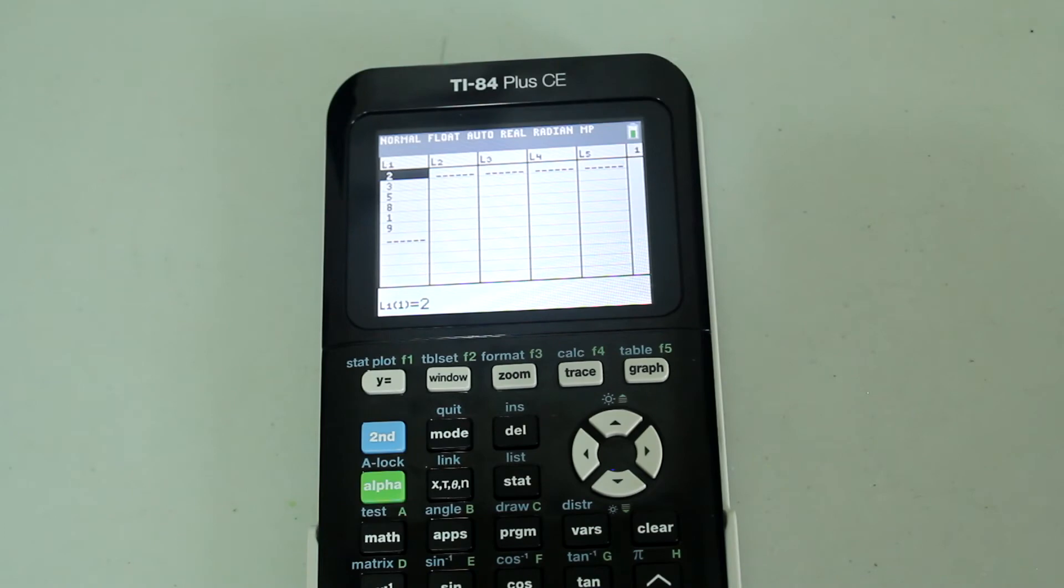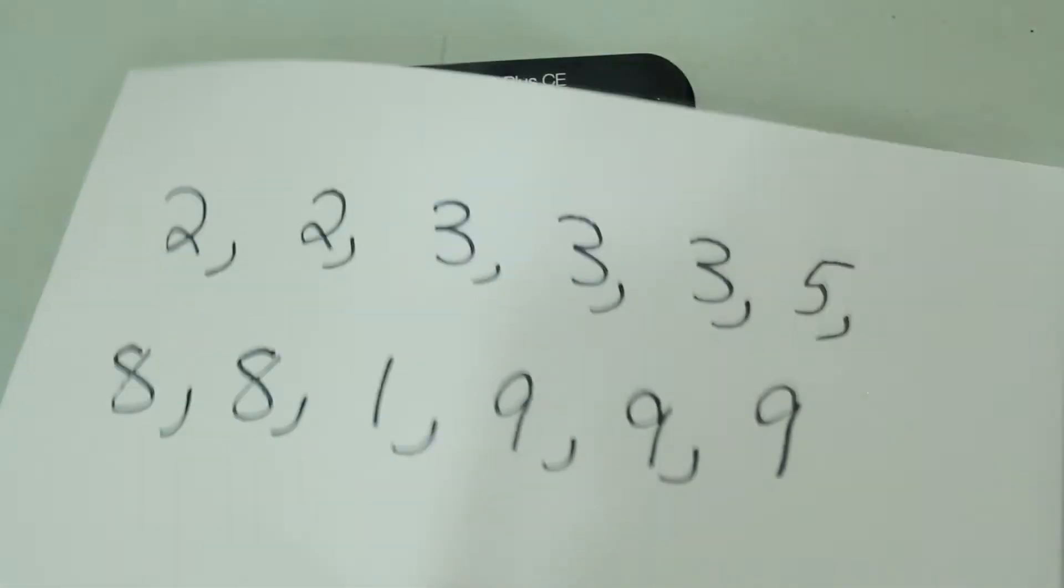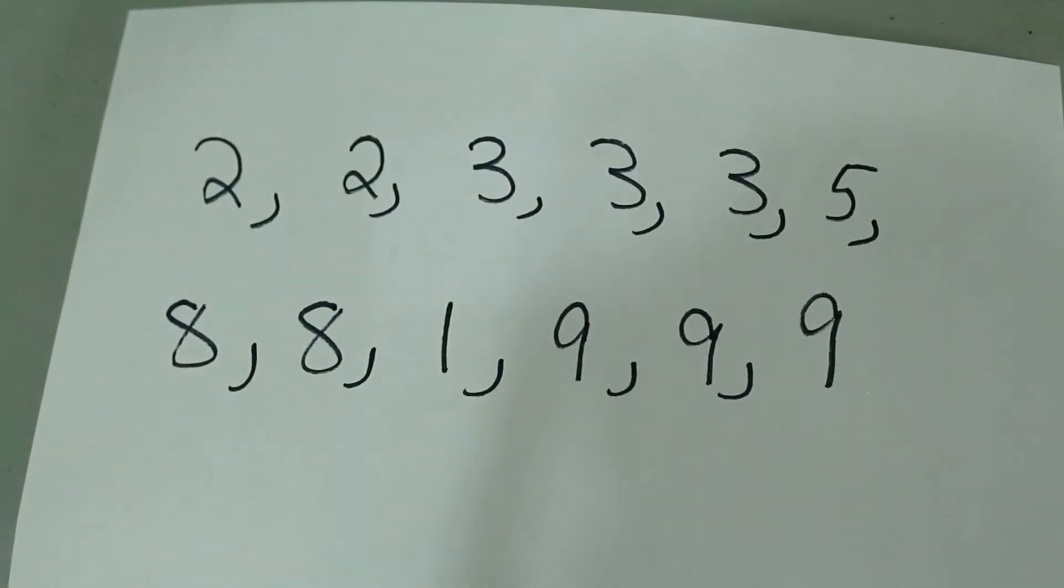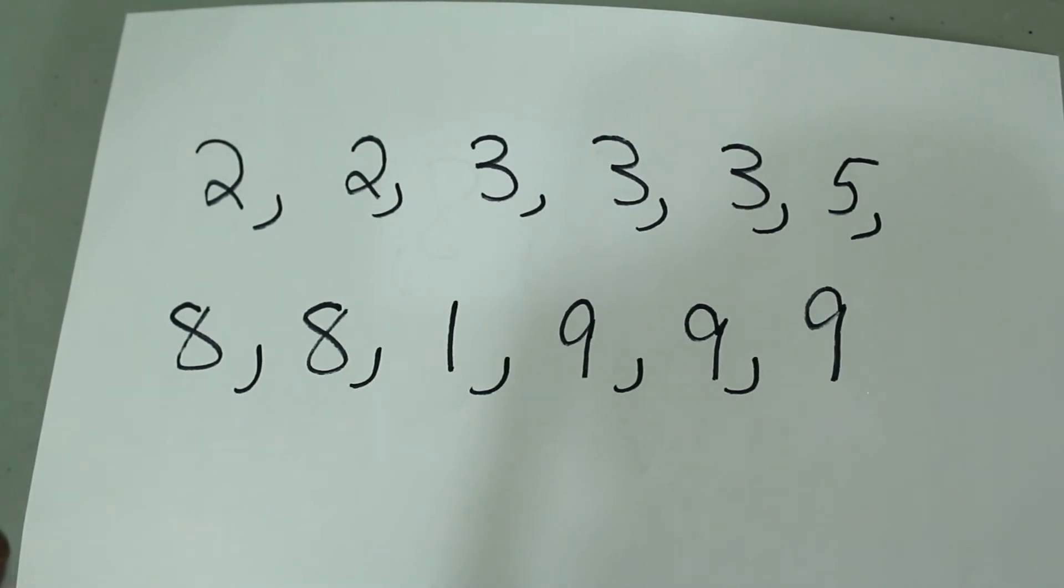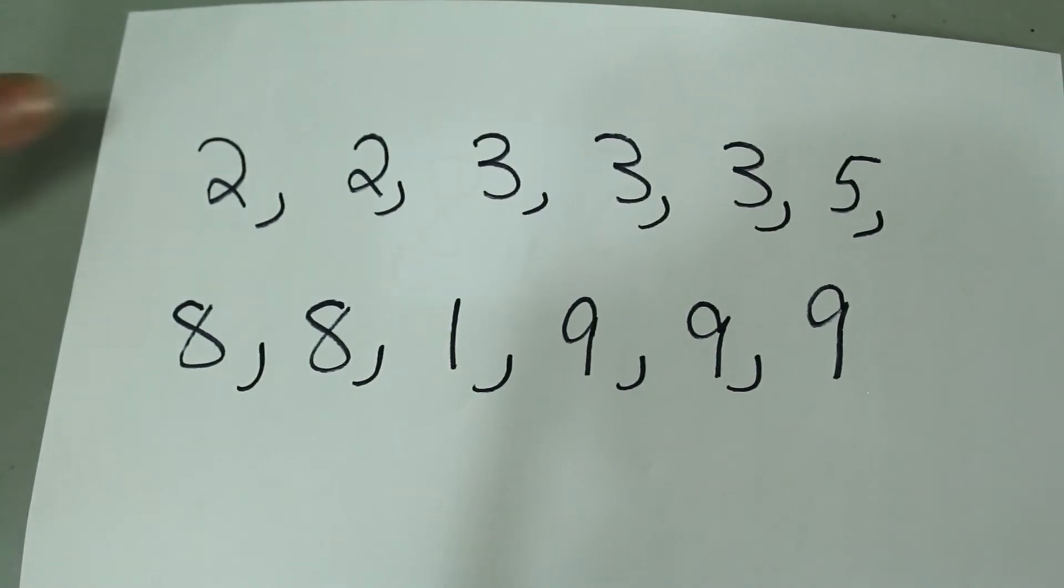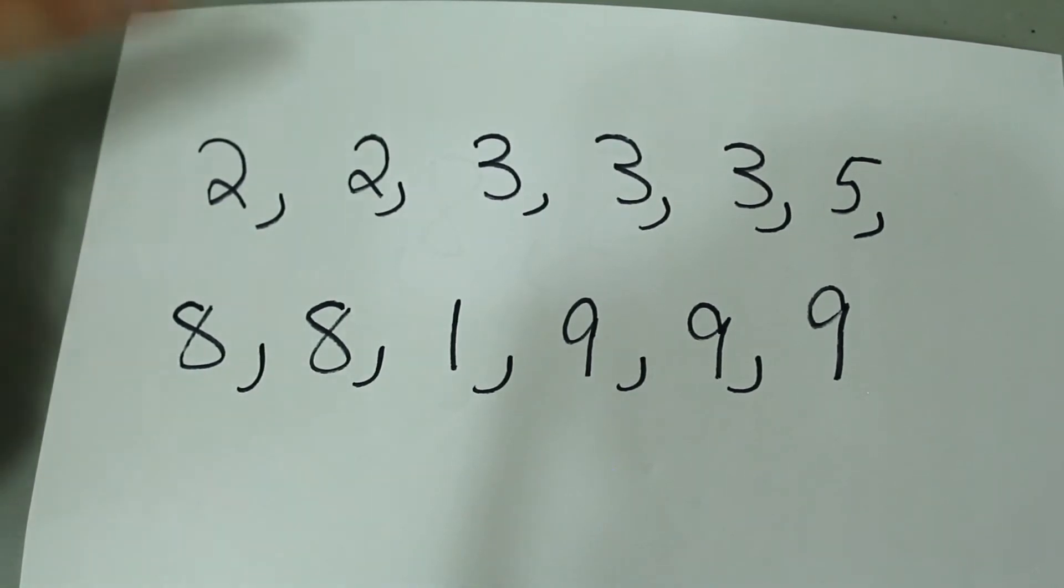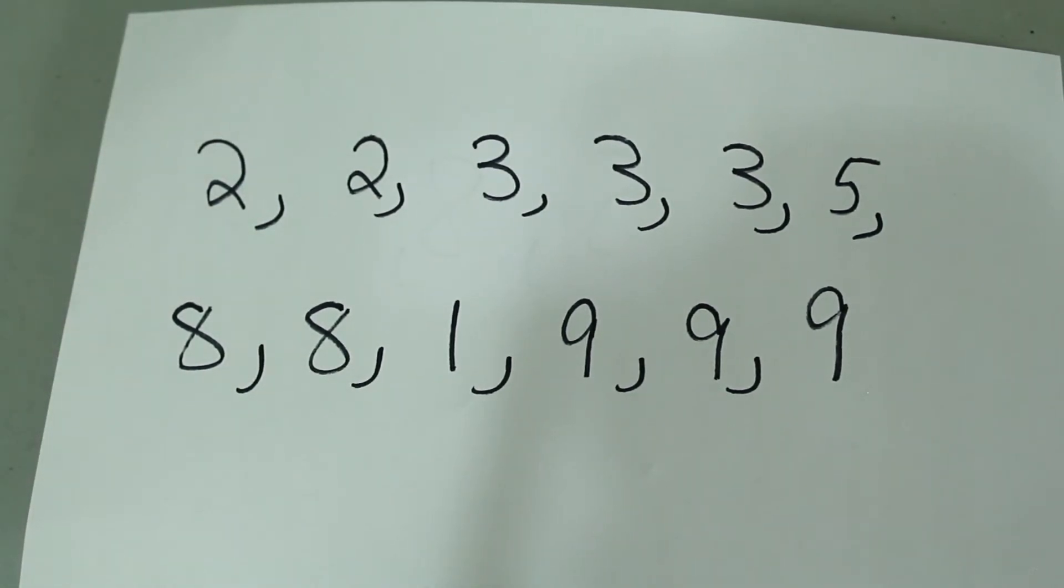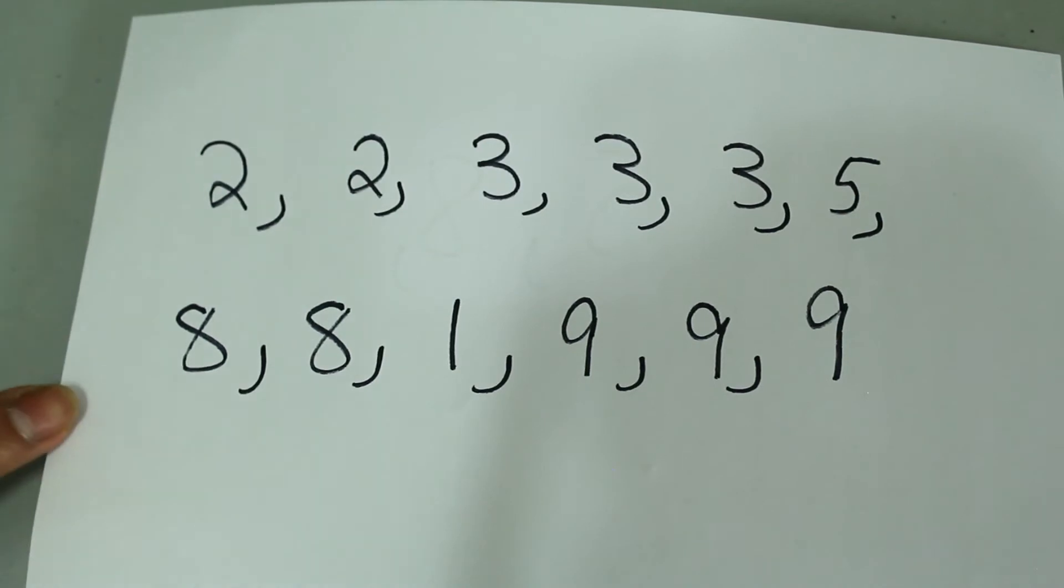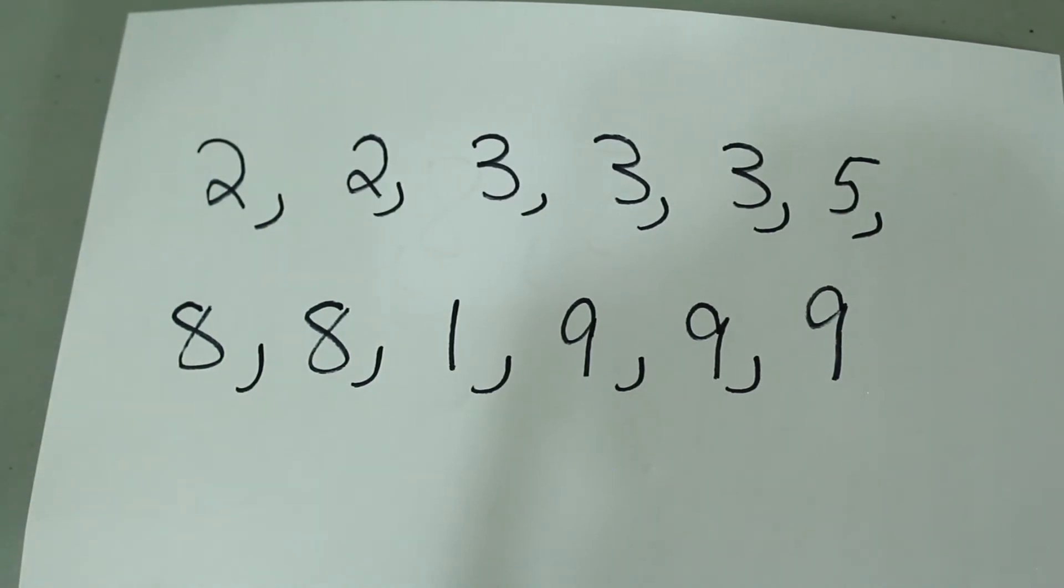This time the data set we are working with is 2, 2, 3, 3, 3, 5, 8, 8, 1, 9, 9, 9. Notice what's happening here, a data point is repeated multiple times. 2 appears twice, 3 appears 3 times, 5 appears once, 8 appears twice, 1 appears only once, but 9 appears 3 times.